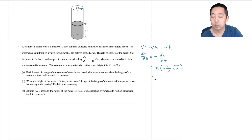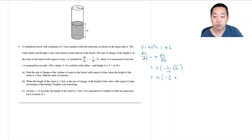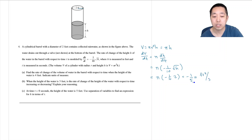So I simply plug in h equals four: π times negative one-tenth times the square root of four, which is two. So this equals negative π/5. The units are cubic feet per second, since this is a volume and time is in seconds.